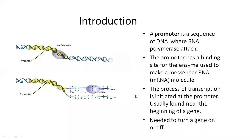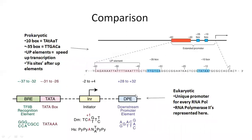Some transcription factors are also involved in gene regulation. After that, we go into a comparison of prokaryotic and eukaryotic promoters. Prokaryotic and eukaryotic promoters are different on the basis of their structure. This is the prokaryotic promoter region, and this is the eukaryotic one.